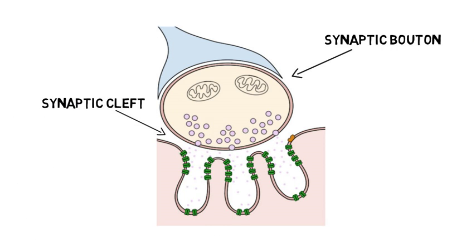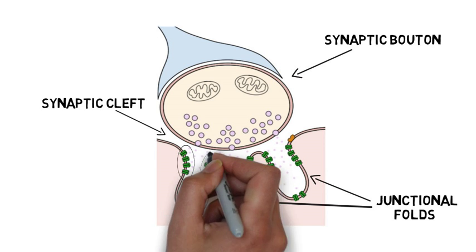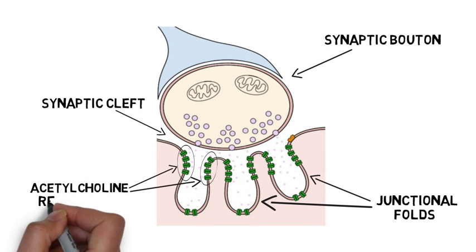The endplate beneath each synaptic bouton contains several deep indentations called junctional folds. These junctional folds contain high numbers of ligand-gated ion channel receptors for the neurotransmitter acetylcholine.